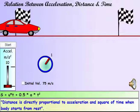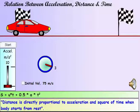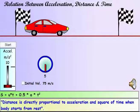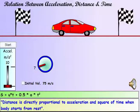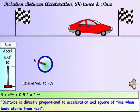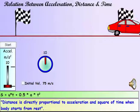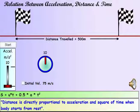The distance traveled by an accelerating car can be computed as UT plus half AT squared. Note that the first part, UT, is the distance traveled if the car was traveling with constant velocity and not accelerating. The second part, half AT squared, is the extra distance covered due to the acceleration.